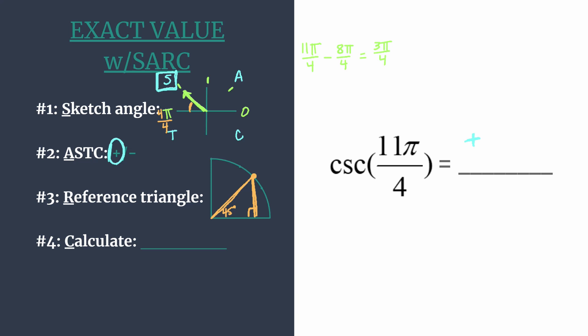And then we know that the coordinates that go with the special right triangle are √2/2, √2/2.